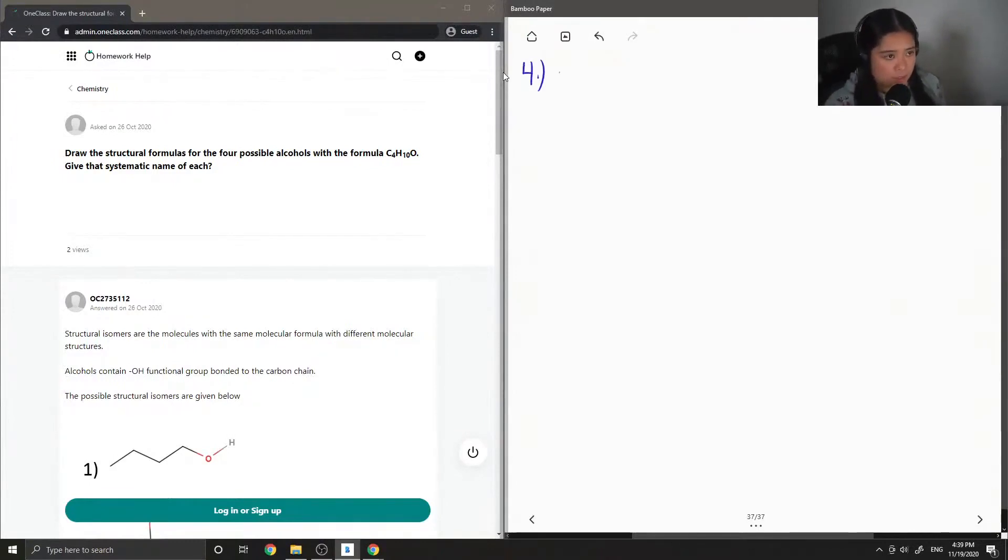First I'll define what a structural isomer is. Structural isomers are when you have the same formula, so in the case of the question it's C4H10O, but different structures.